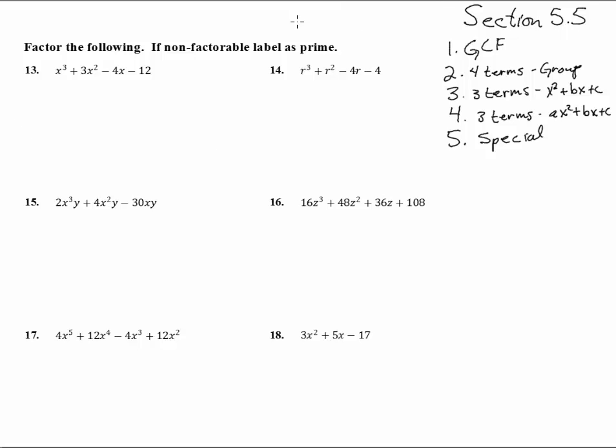Here we are in section 5.5 with numbers 13 through 18. Factor the following, if non-factorable, label as prime. Alrighty, so we're going to keep all five of these possible ways of doing it.